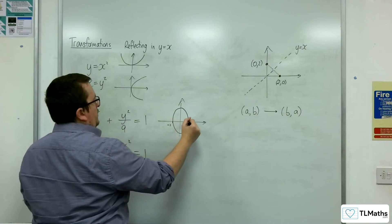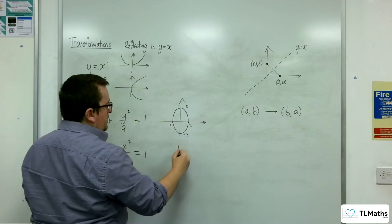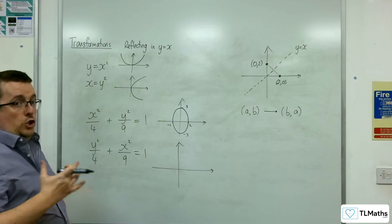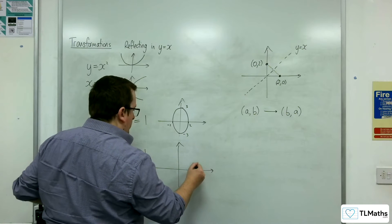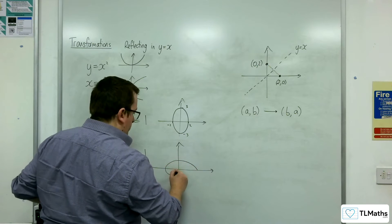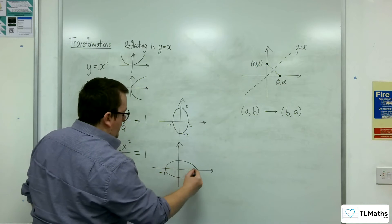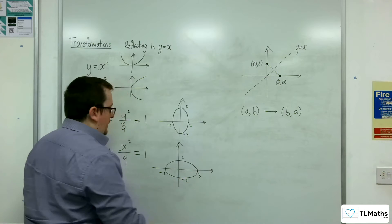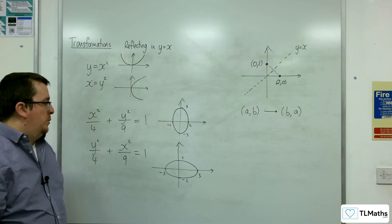So minus 2, 2, 3, minus 3. If you reflect that in the line y equals x, then shape-wise it now changes. So it's now between minus 3 and 3, and minus 2 and 2 that way instead. That's what the reflection would do.